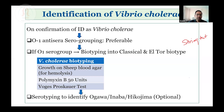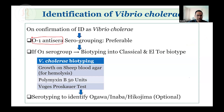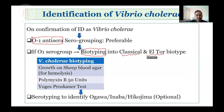Once we confirm the ID as Vibrio cholerae based on biochemical tests, it is highly recommended to further confirm using O1 anti-sera — that is serogrouping. If the organism is positive by O1 serogroup test, then biochemical tests to differentiate whether it is Classical or El Tor biotype are mandatory. This is done using three simple tests: growth on sheep blood agar — if there is hemolysis, it indicates El Tor type.